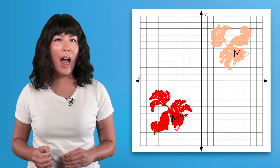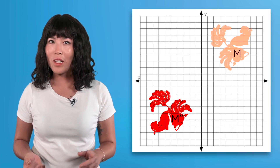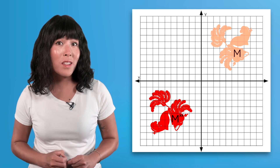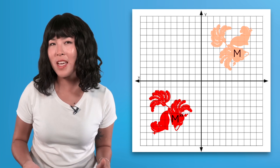Welcome back! In the last lesson, we learned how to perform sequences of transformations and use coordinate notation to represent them. But let's say we're only given the pre-image and the image of a sequence — we only know how we started and how we ended. There is more than one sequence that the pre-image could have taken to become the image.